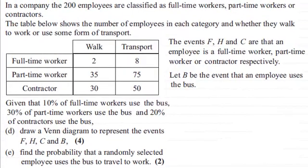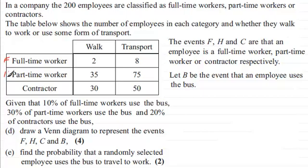Hi there. Just as a quick recap, in case you didn't see the previous video, what we've got here is a company that has 200 employees and they're classified as full-time workers, part-time workers, or contractors in this table here. We're told that the events F, H, and C are that an employee is a full-time worker (F), a part-time worker (H), or a contractor (C).